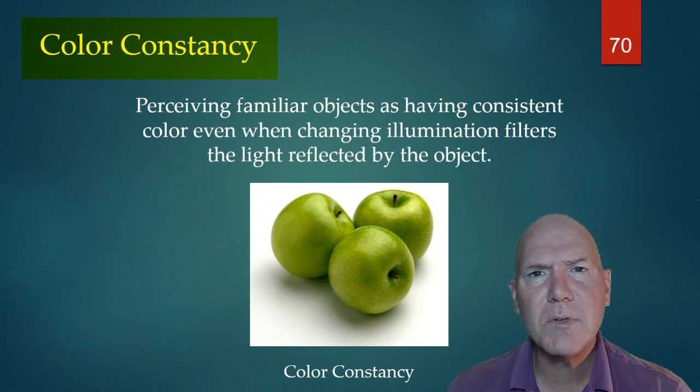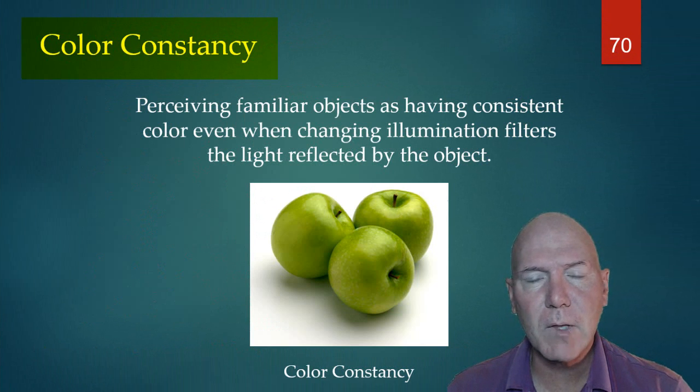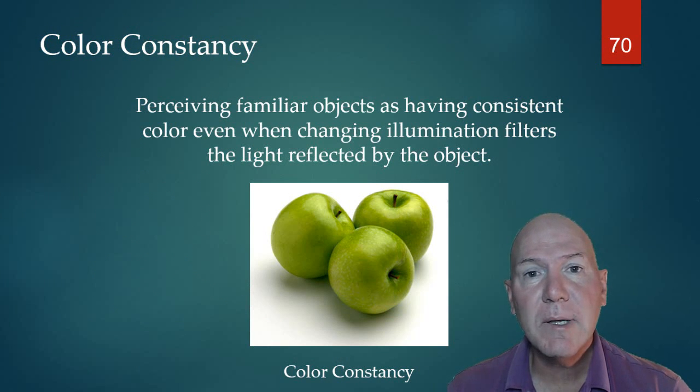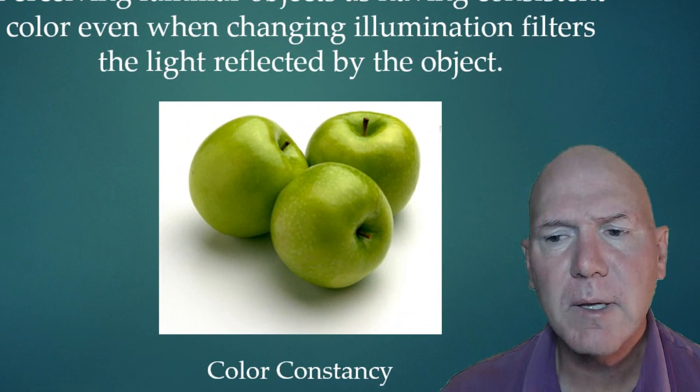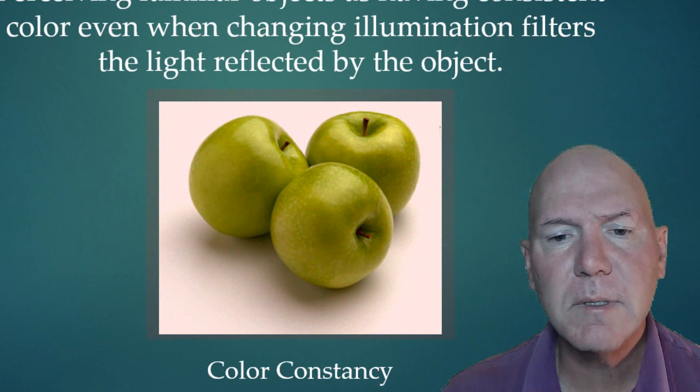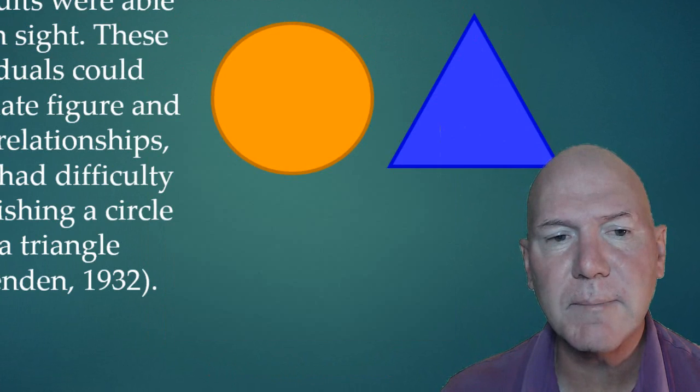Color constancy almost remains even though different light hits our shirt or whatever it is, and the environment around it, the illumination will change. We still perceive it as the same color. These are green apples. Despite—notice the change in how they look when we change the background—they're still green apples. That's color constancy.